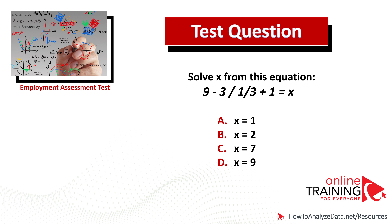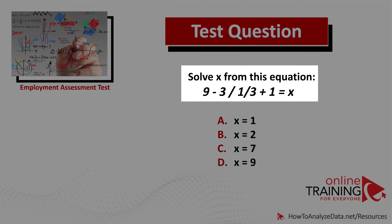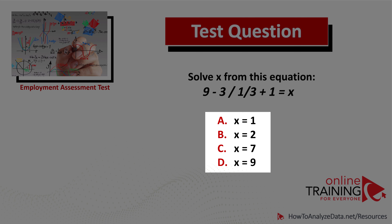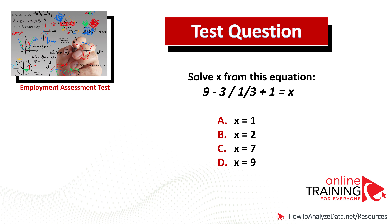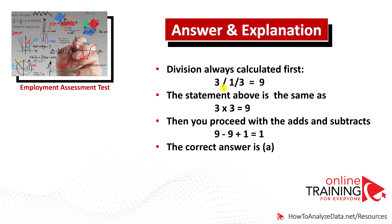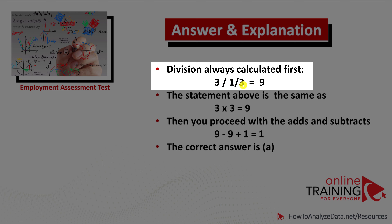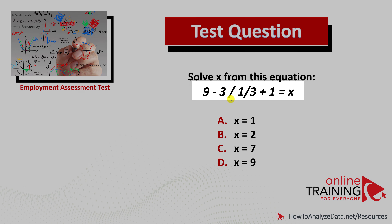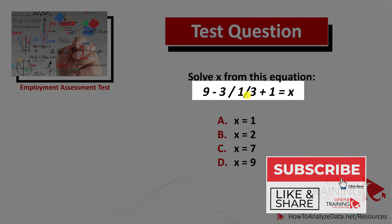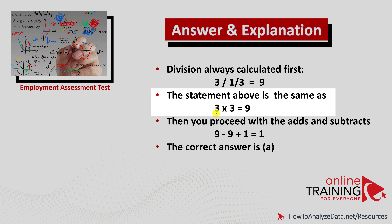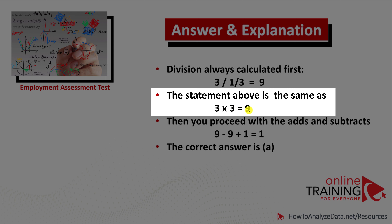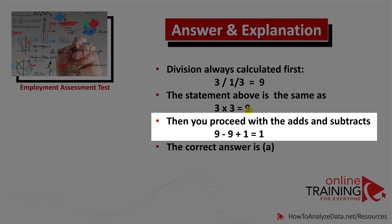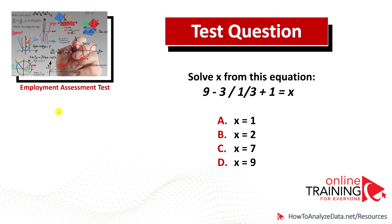Here is a tricky question which many candidates answer incorrectly. Solve x from the given equation. The tricky part is that you need to divide 3 by one-third, which equals 9 — many people mistakenly multiply 3 by one-third and get 1. Dividing 3 by one-third is equivalent to multiplying 3 by 3, which equals 9. When you proceed with the additions and subtractions, you get to the value 1. The correct answer is choice A.